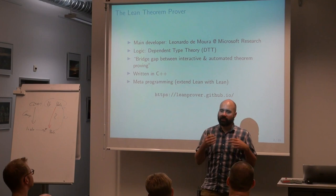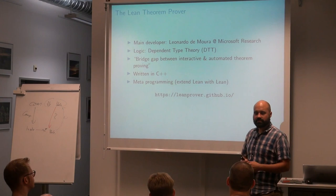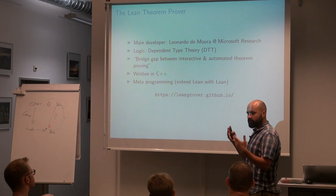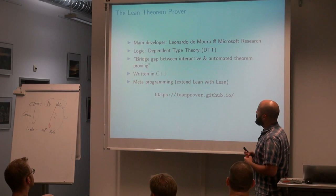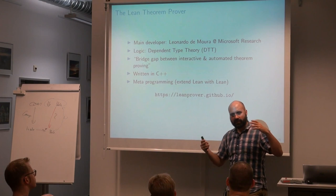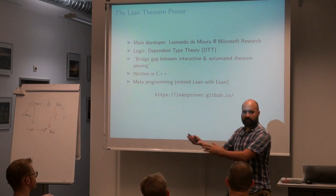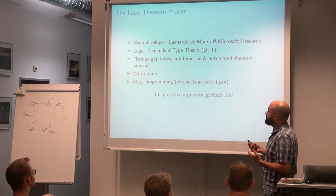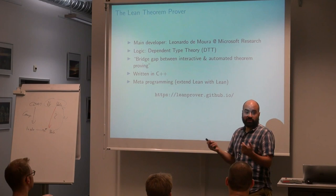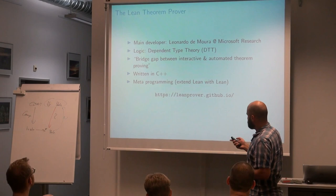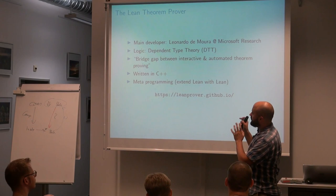One important thing in Lean is that it's based on dependent type theory, similar to Coq or Agda — it's a very powerful functional programming language where the types are so powerful that we can write down logic. Leo's original goal, which he developed with Jeremy Avigad at CMU, is to bridge the huge gap between interactive theorem provers, where you need very detailed proofs, and SMT solvers. The goal is still developing; Lean is still under development.